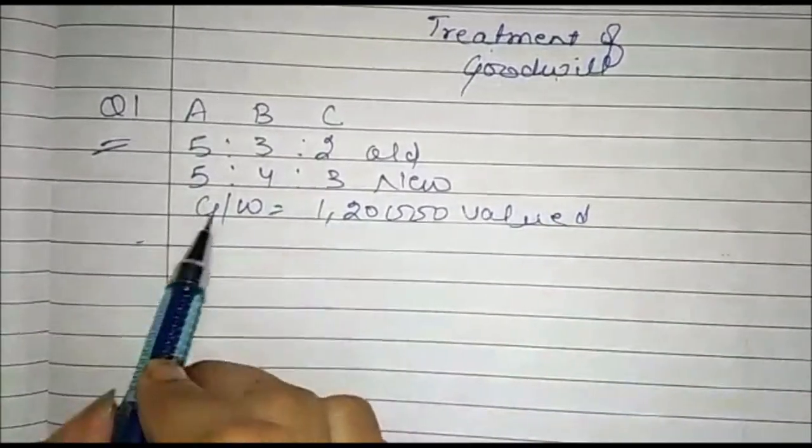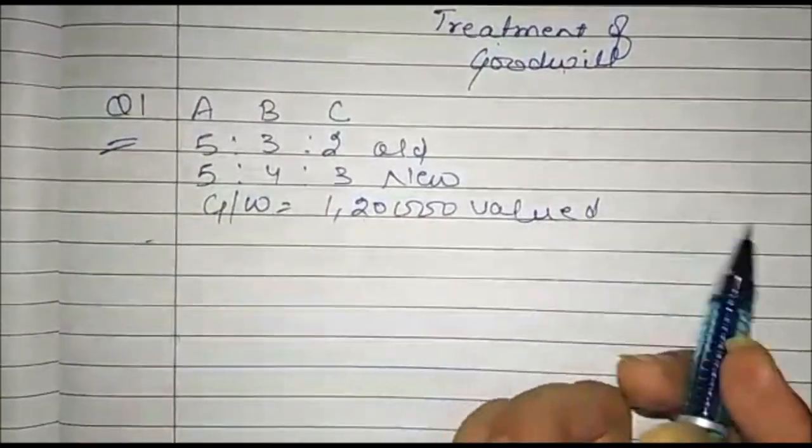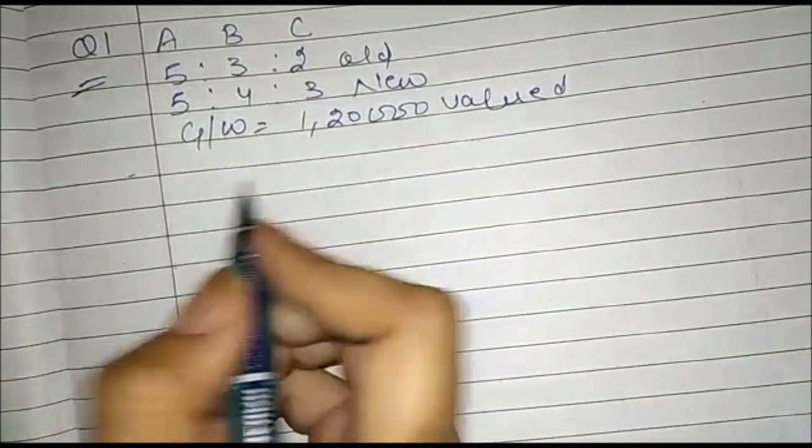The question asks us to pass the goodwill entry. First, we need to calculate the sacrificing and gaining ratio.